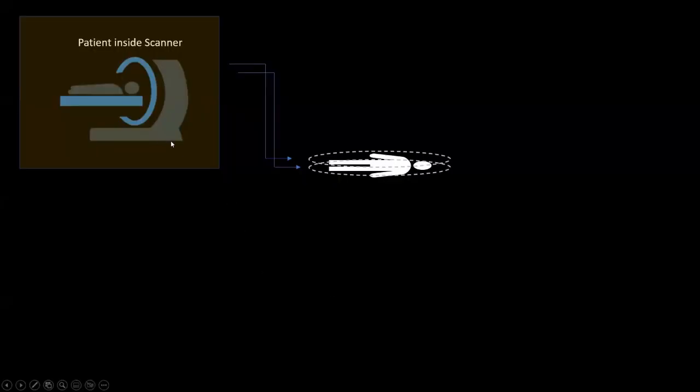Before going to diffusion-weighted imaging, I'm going to give you an overview of how images are being generated in MRI. Let's take an example of a simple gradient echo sequence. First, we position the patient inside the scanner. So, here is the patient. We can see that the magnetic field lines. Basically, the patient is lying inside the magnetic field. Next, we need to apply a radiofrequency wave perpendicular to the magnetic field. So, I will switch on the RF for a short time and switch off.